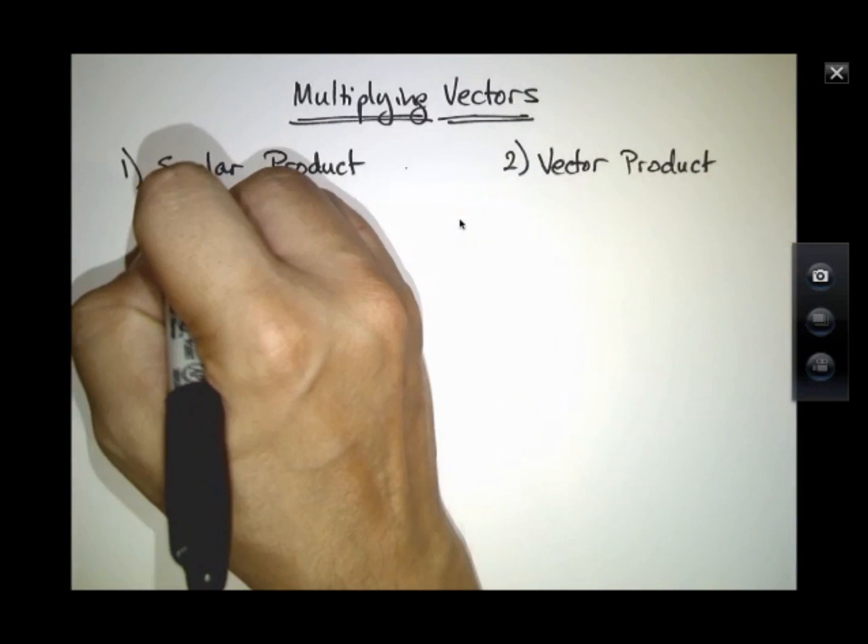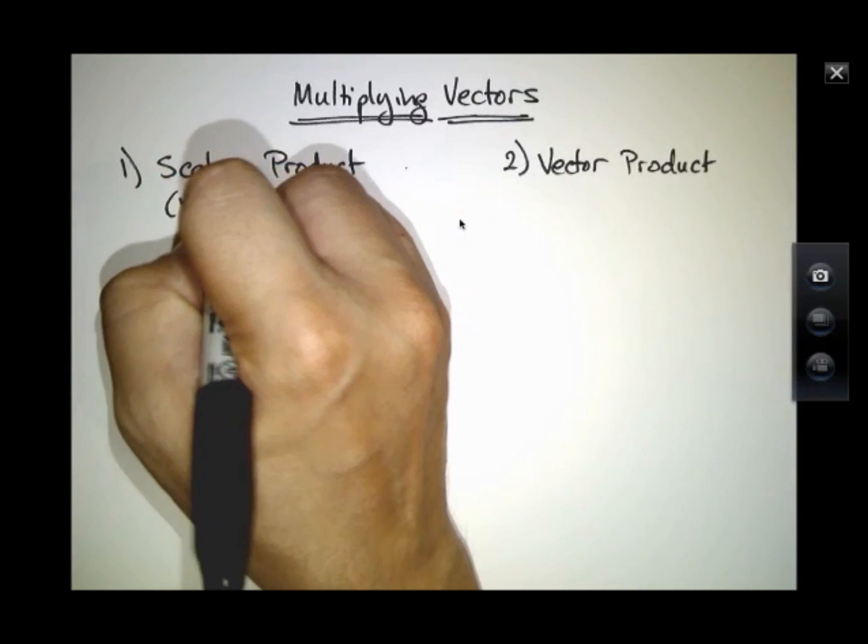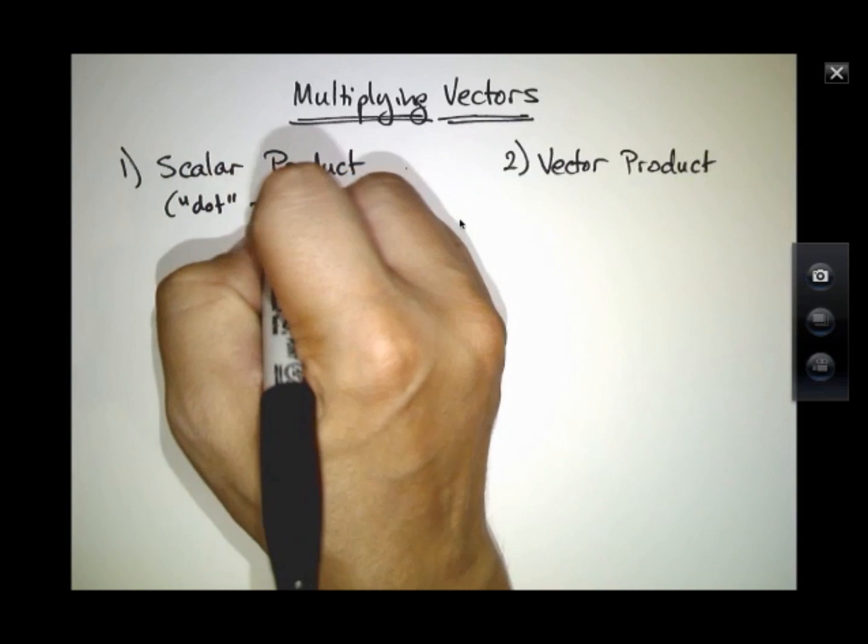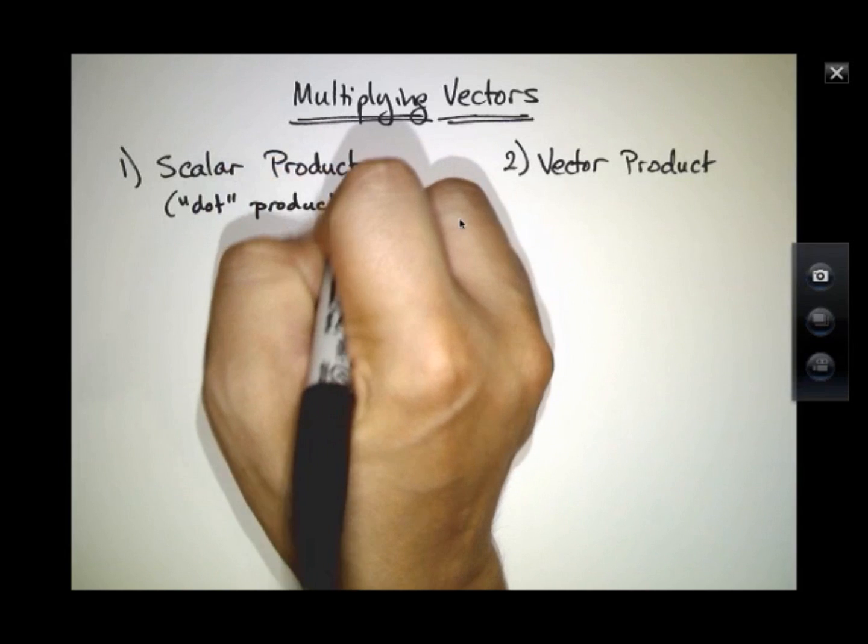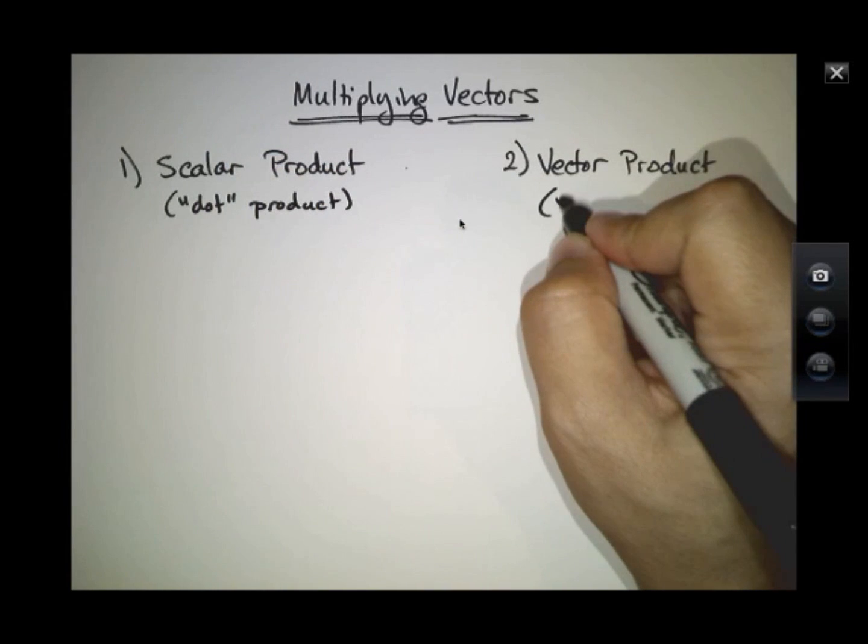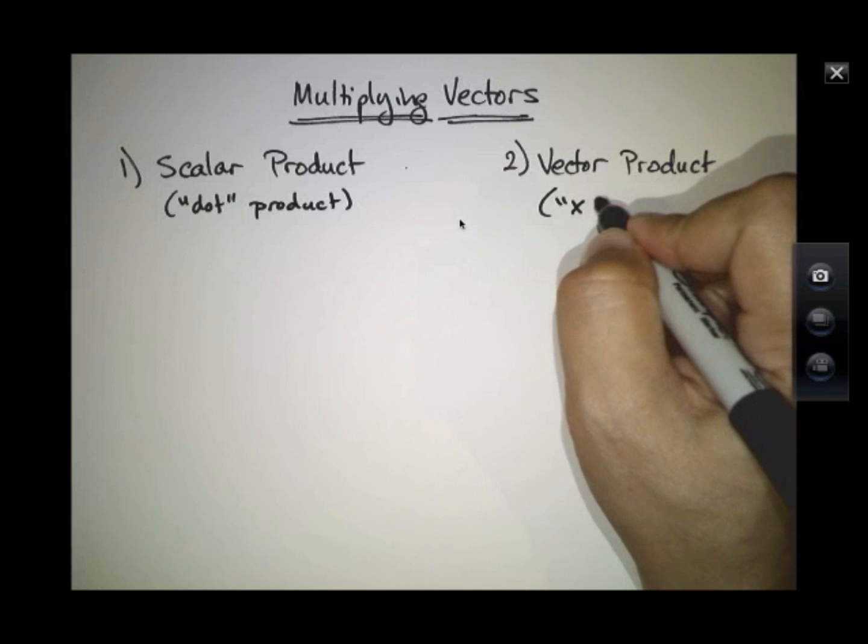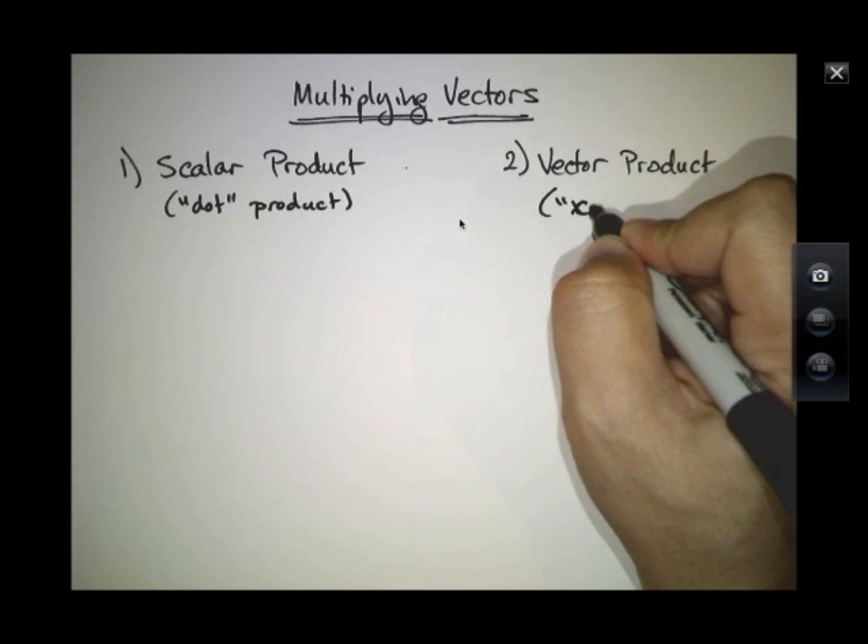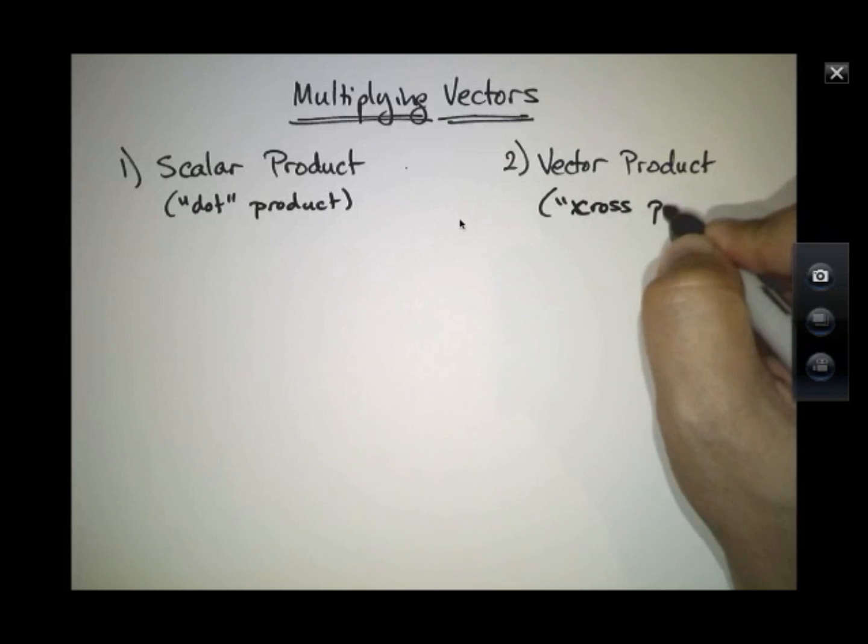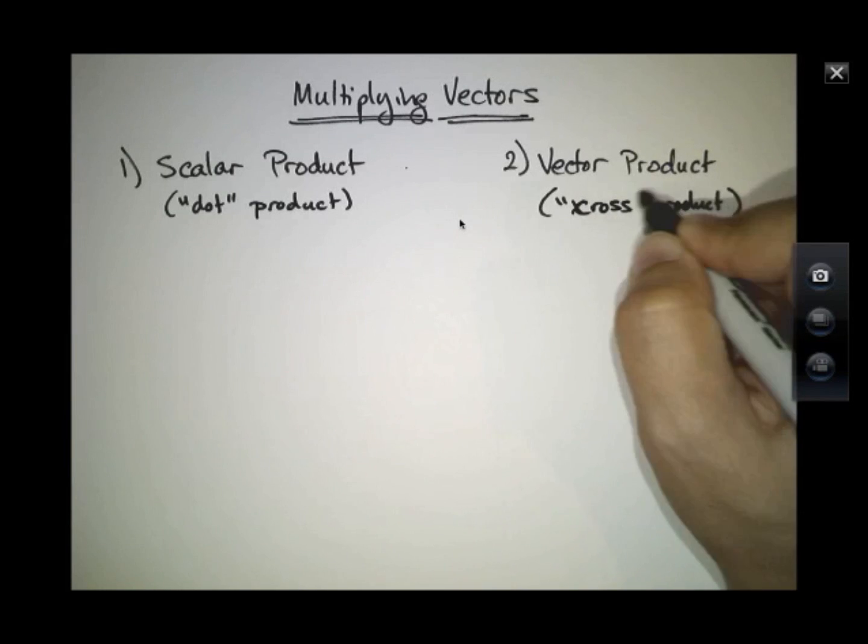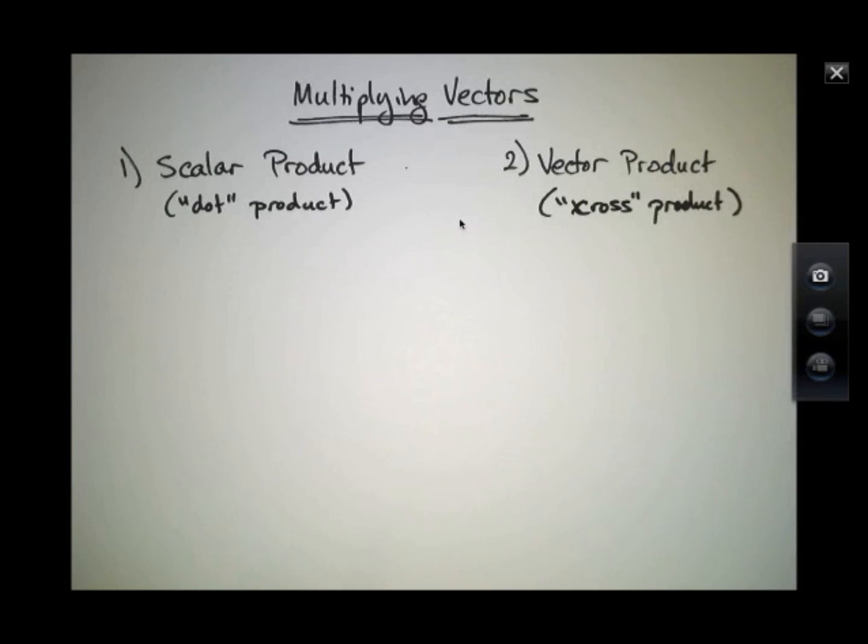There's also the more colloquial names: the dot product given to the scalar product, or the cross product given to the vector product. We'll see why that's so in a moment. Let's deal with the scalar product first.